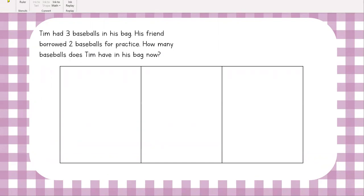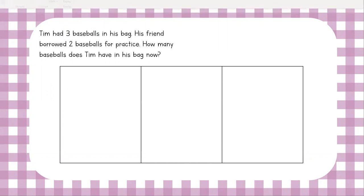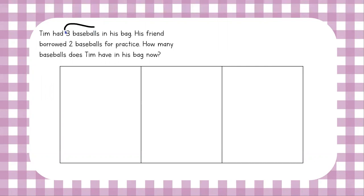First, what we're going to do is make sure that we have our important information. Our important information for this problem is how many baseballs Tim has in his bag — we're going to circle it. Three baseballs. The other thing we're going to circle is two baseballs. This is all of our important information: three baseballs and two baseballs. Now let's go ahead and write that down.